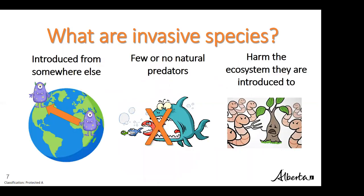What makes an invasive species invasive? They are introduced from somewhere else — they move from the area they're born in to a different place. These species invade areas where natural predators don't live, so they can quickly go from just a few individuals to many more. They reproduce really quickly and can handle a lot of bad conditions, which harm the ecosystem. These traits make invasive species hard to control in a new area.